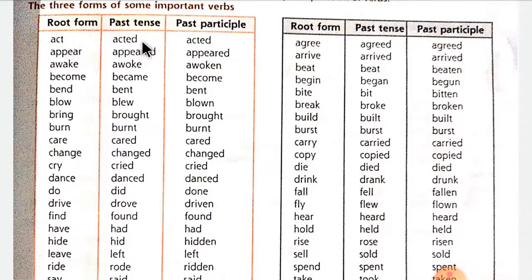For example: act — acted — acted. Appear — appeared — appeared. Most verbs in their root form take 'ed' to make the second and third forms. But there are verbs that make a spelling change — they change in spelling — where the past tense and past participle form change differently.